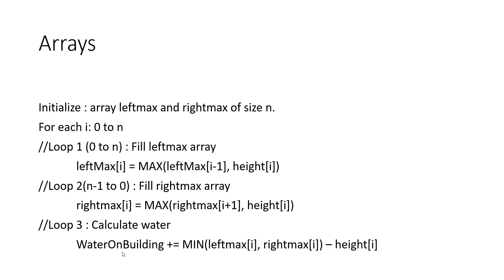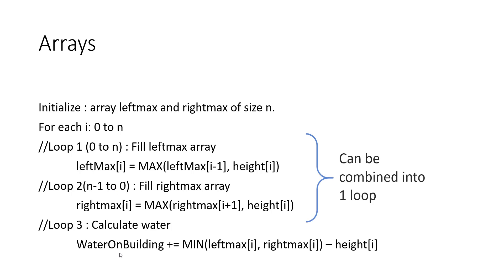We can save the maximum on the left and maximum on the right in separate arrays and then calculate the water on each building. So we'll have loops to calculate left max and right max, and then once we have these two, we loop to find the water. We can combine these into one loop, but for understanding purposes I've shown two different loops.